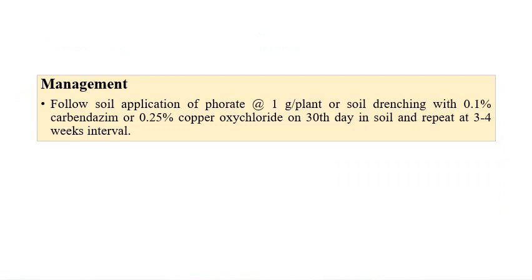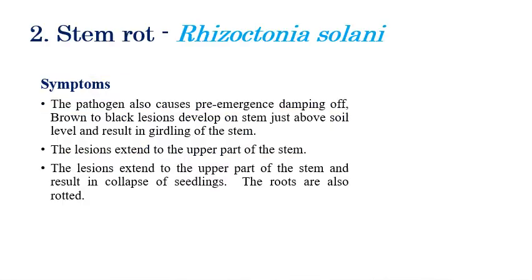For management, application of carbofuran at the rate of one gram per plant, or soil drenching with 0.1% carbendazim, or 0.25% copper oxychloride applied on the 13th day after planting and repeating the same process at 3 to 4 week intervals can efficiently manage this disease.